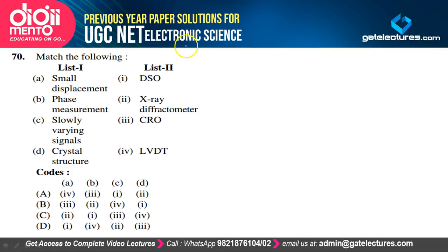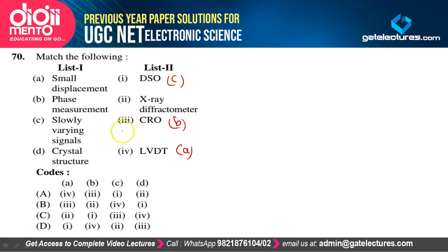Match measurement instruments: Small displacement → LVDT (A-4); Phase displacement → CRO (B-3); Slowly varying signals → digital storage oscilloscope (C-1); Crystal structure → X-ray diffractometer (D-2). Option A satisfies our explanation.